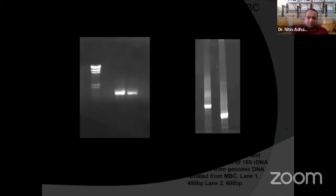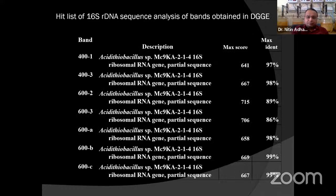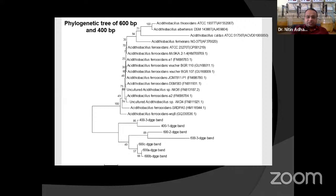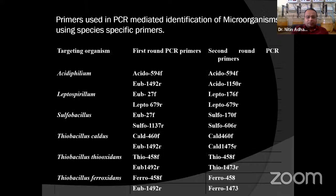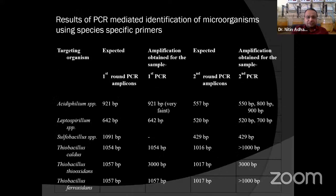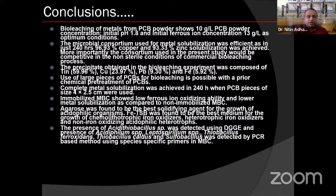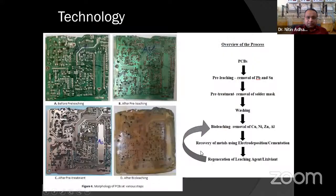We identified these bacteria using techniques such as DGGE and specific primers, and determined the phylogenetic relationships. Some technical slides will be skipped. The conclusions show that copper leaching could be achieved at 96%, and for zinc it is 93%. The recovery rate has also been determined. That was the scenario up to around 2012.